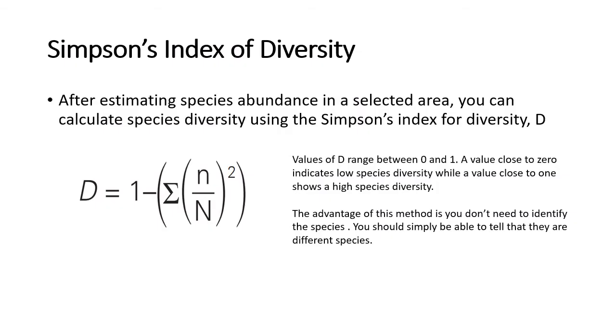So Simpson's index of diversity typically follows after you've estimated species abundance in an area. After you've calculated things like your species density and your species frequency, you would then need to calculate your Simpson's index of diversity and this is the formula that is used. Now I just want to tell you that most of the time CIE would provide you with the formula but what they will not tell you is what each parameter stands for. So you have to know what they stand for.